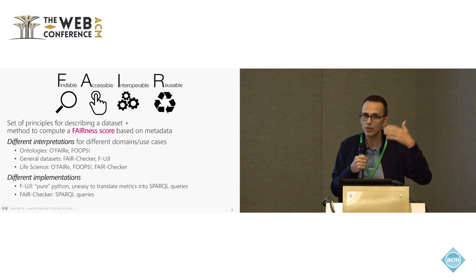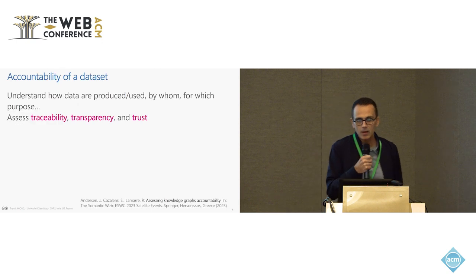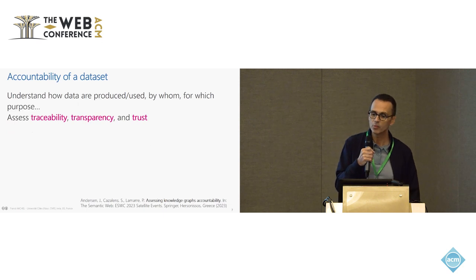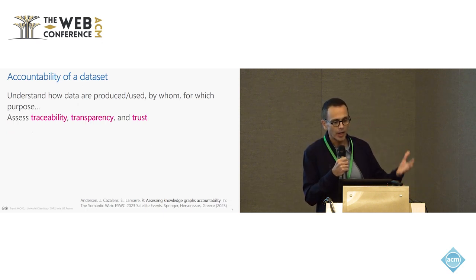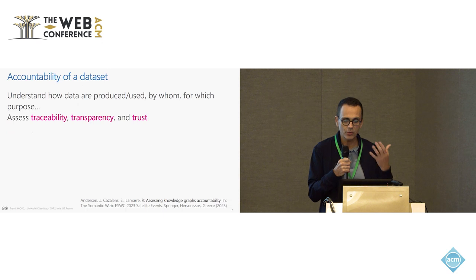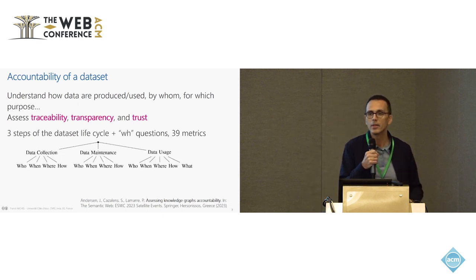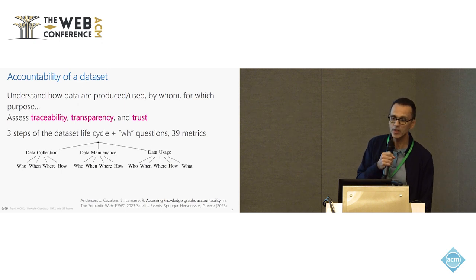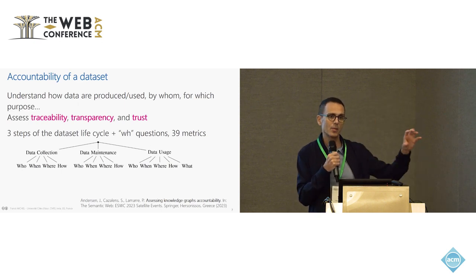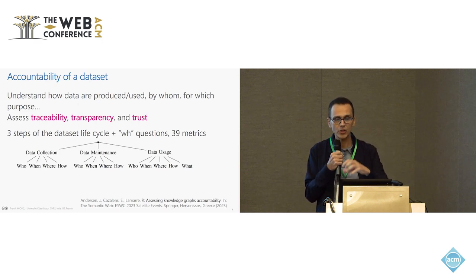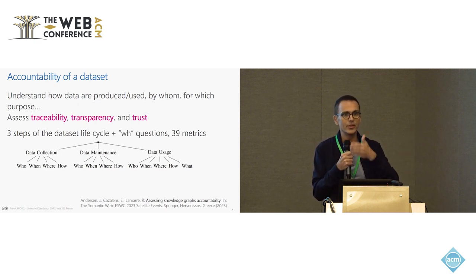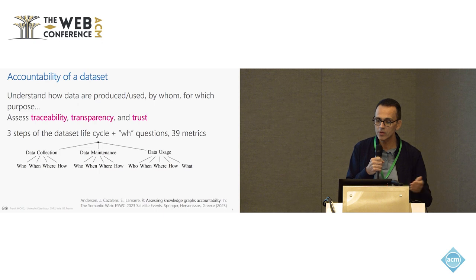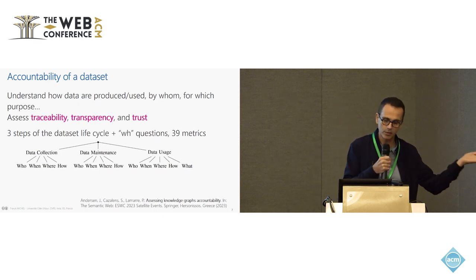The second measure we wanted to compare with is accountability. When we say accountability, this is to be understood as how the data has been produced, by whom, for which purpose — so it's about traceability, transparency, and trust. This work is based on a theoretical model called LIQUID, which distinguishes three main steps of the lifecycle of a dataset: data creation or collection, maintenance, and usage. For each of those three steps, you have a set of so-called W5H questions — who, when, where, what, and how.